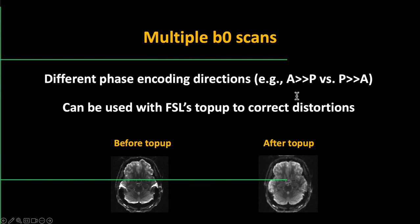Typically we have another very short scan — just one or two B0 scans in the opposite phase encoding direction. We combine both and use FSL's top up to undo those distortions. That's something I would always do. If you don't have those opposite phase encoded images, you won't be able to undo that distortion, unfortunately. They don't take that much time to acquire, so I'd always recommend it.